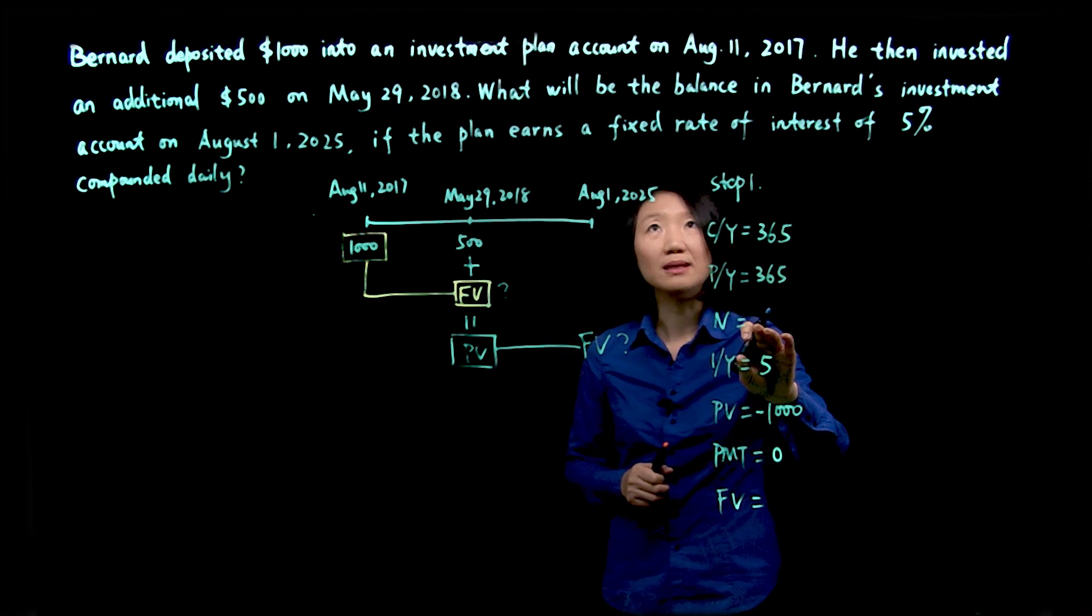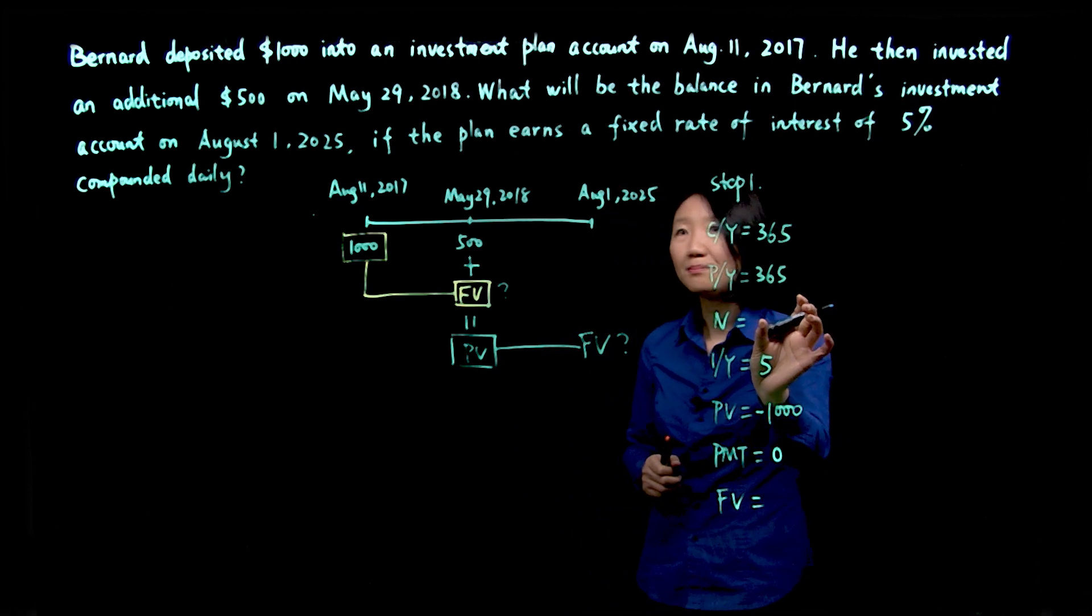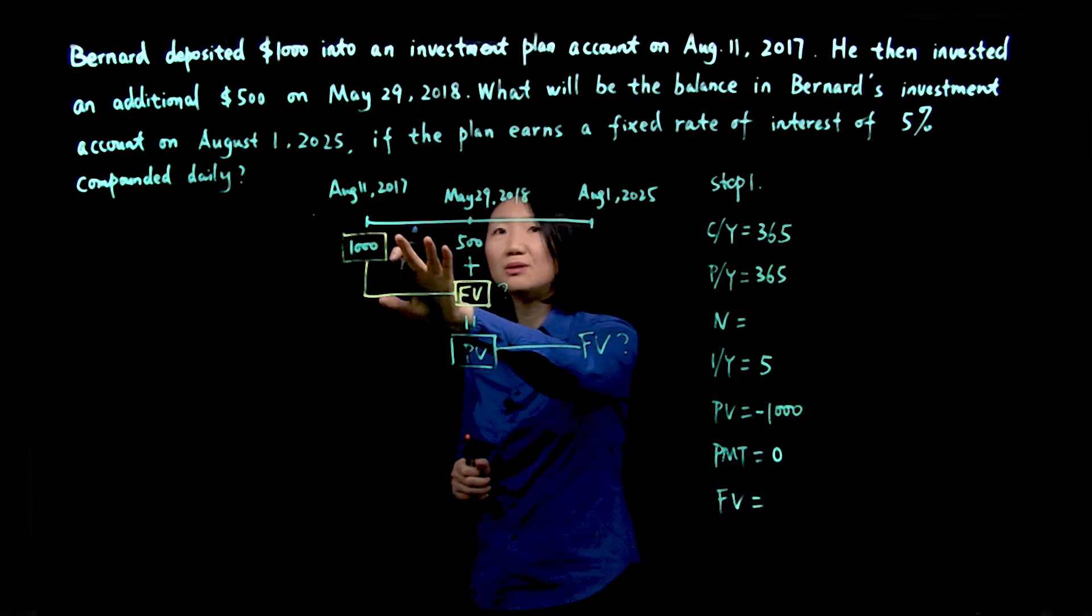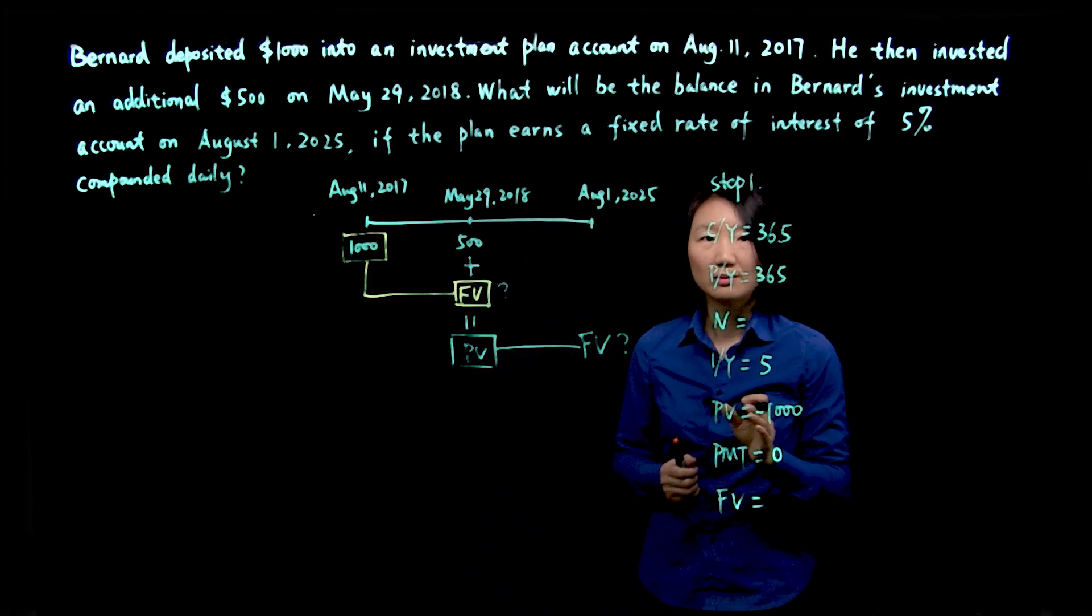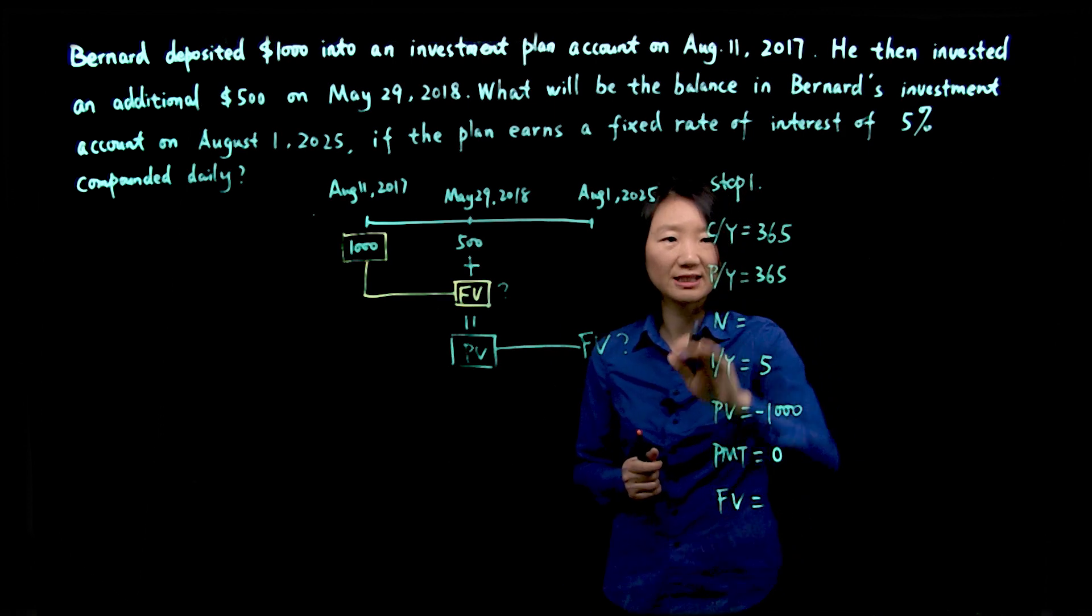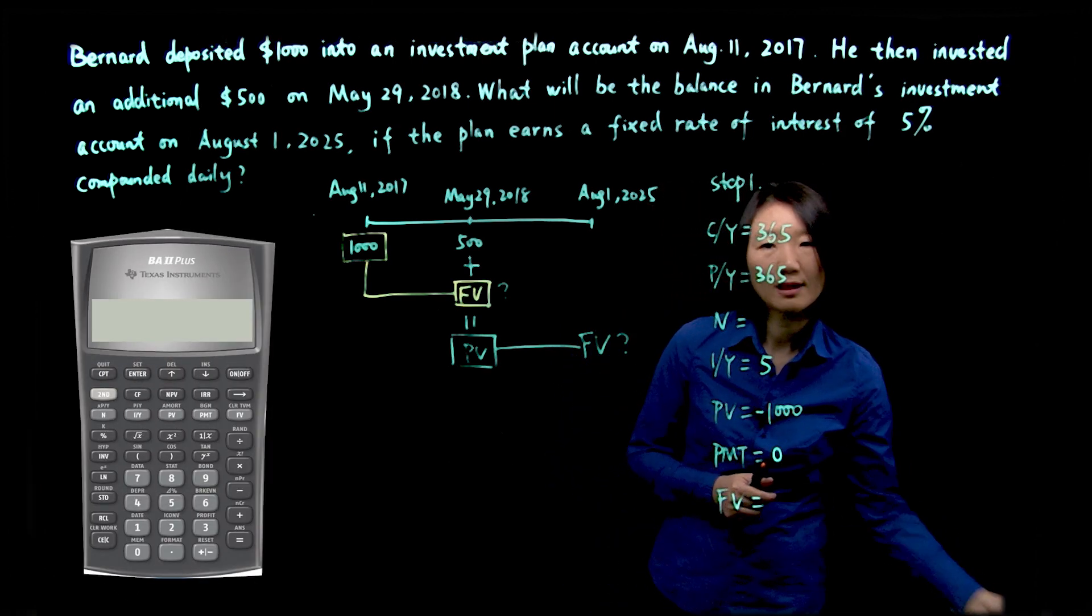N would be the time, so the compounding period between these two dates. Now we'll have to use the calculator to figure that out.